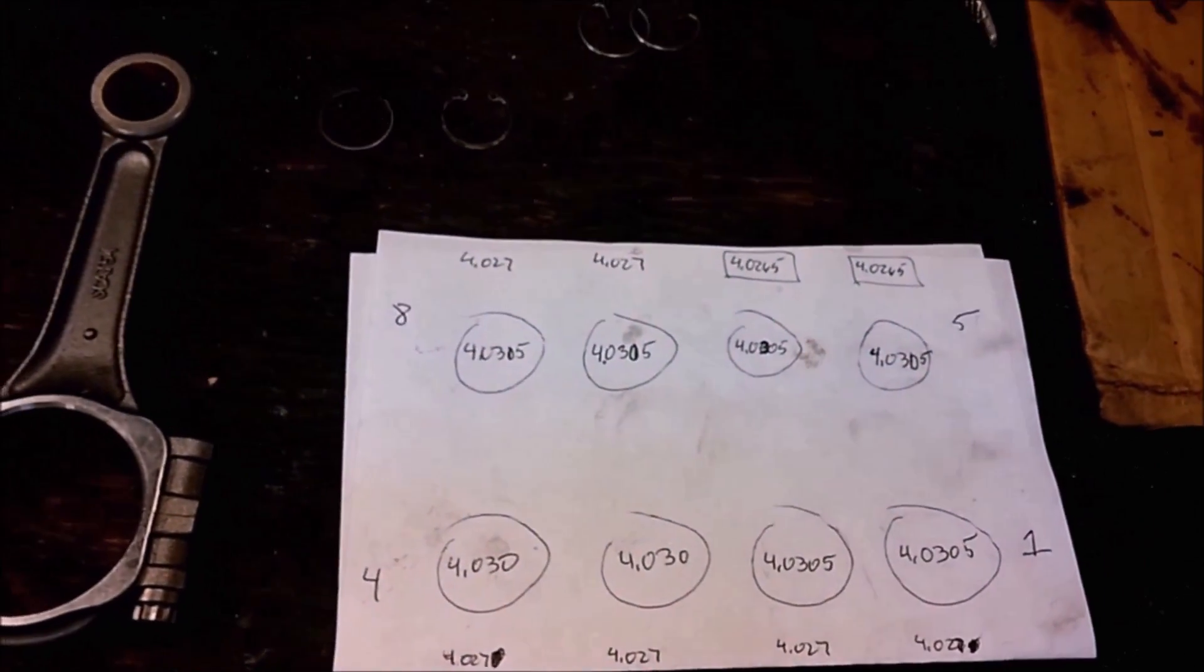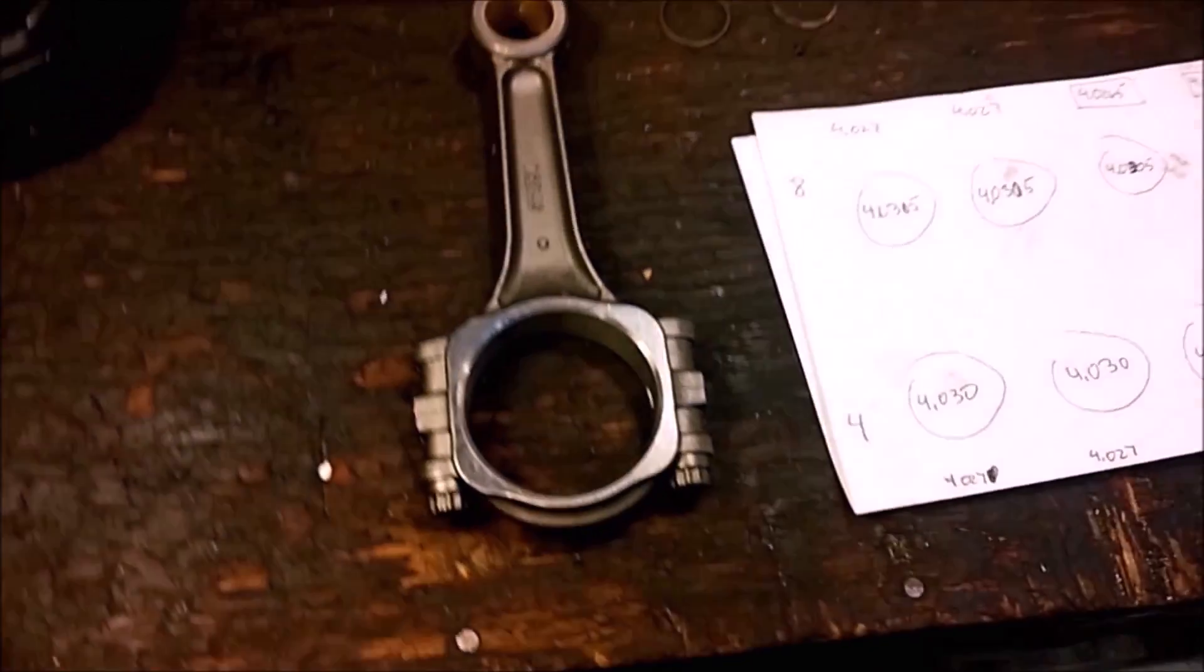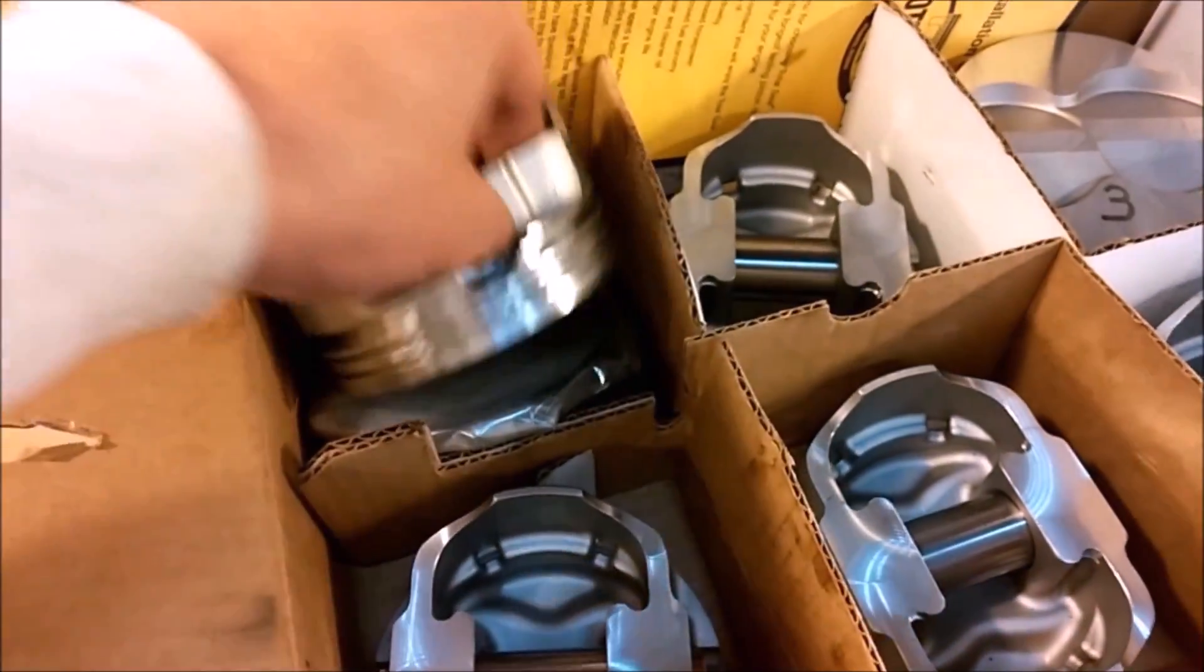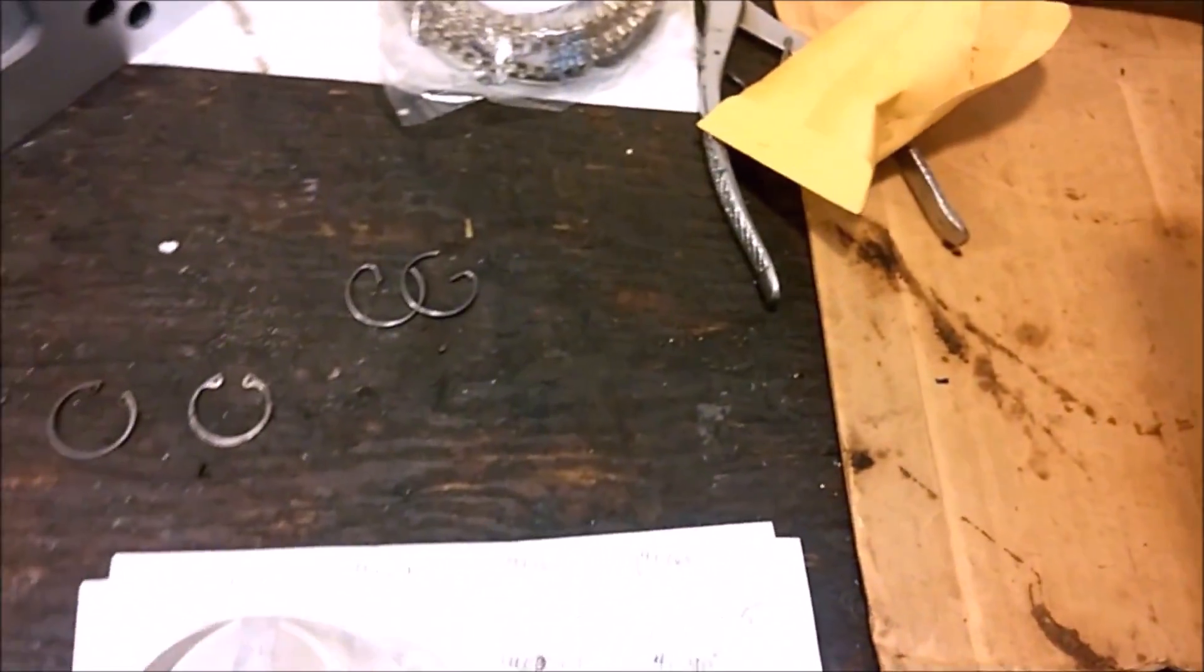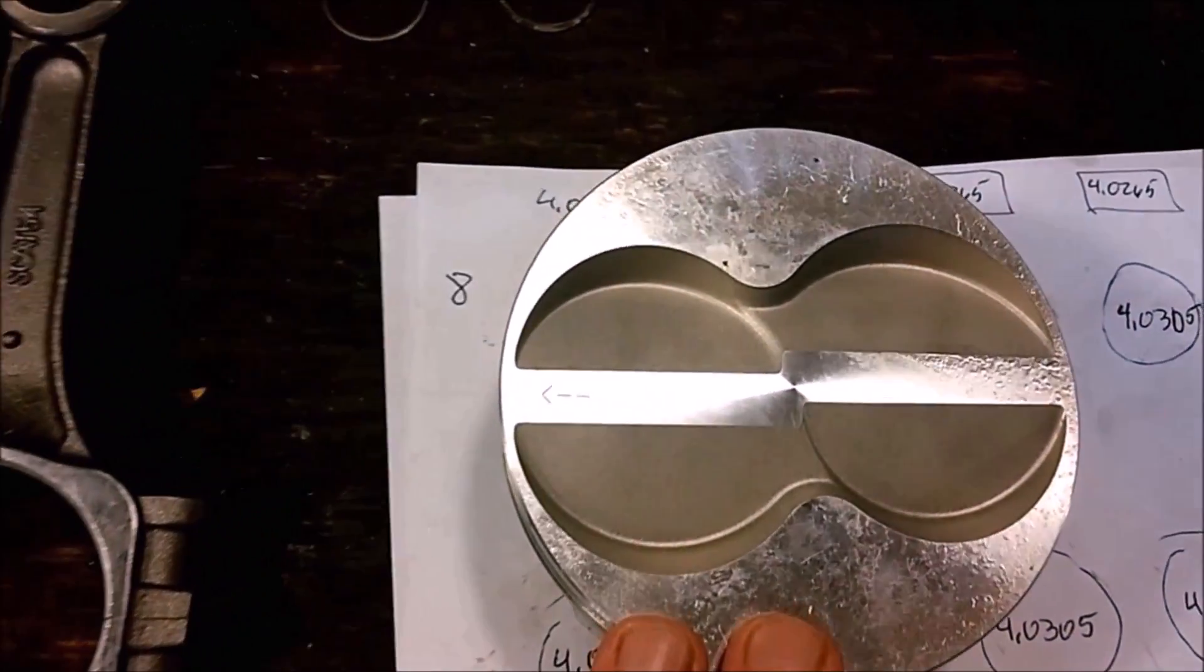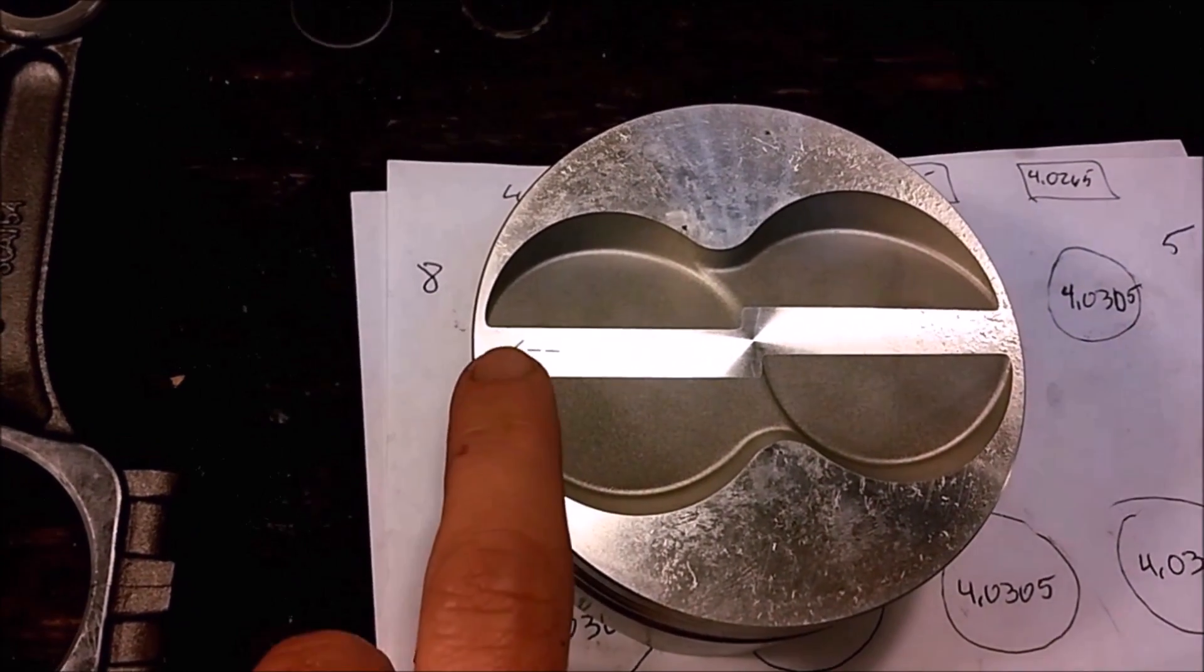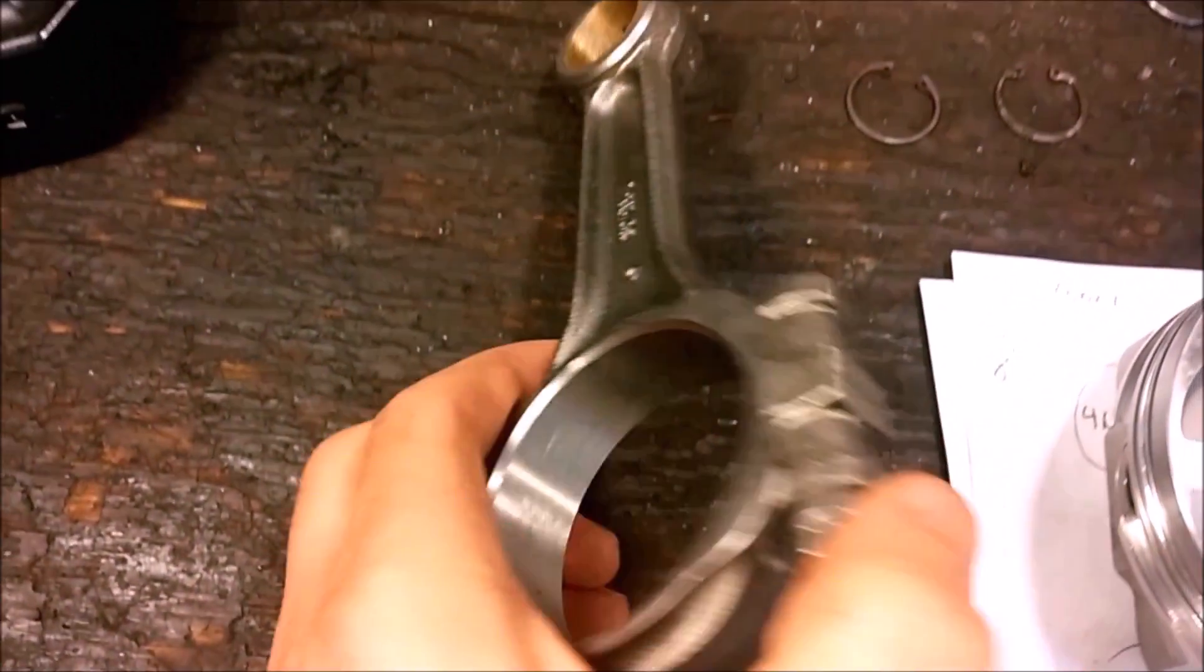This is important at this stage because the rods are going to be mated into the pistons. And if you look, the pistons are directional with this arrow pointing to the front of the engine, and the rods are also directional.